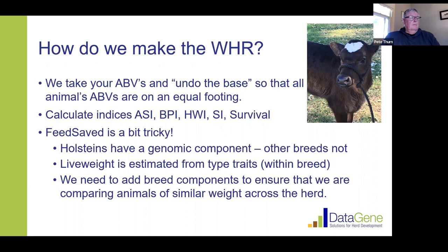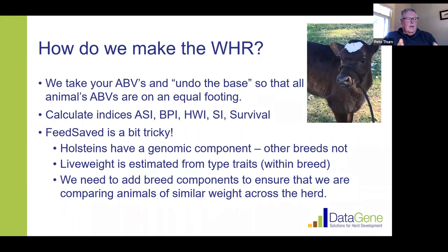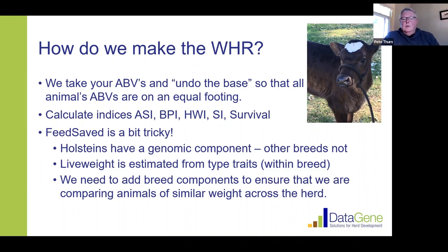Then we calculate the different indices: the ASI, BPI, HWI, SI, and of course Feed Saved. Feed Saved is a bit of a unique trait, partly because Holsteins have a genetic genomic component to it and other breeds don't. We have to make sure we get the relativities of live weight between breeds correct — so when we're talking about kilos of live weight in a Jersey, it's comparable to kilos of live weight in a Holstein or a Red. That was probably one of the trickier things the team had to do when developing this tool.